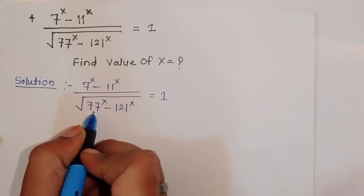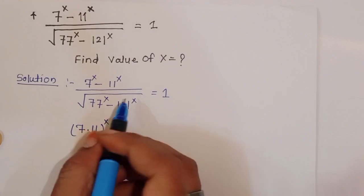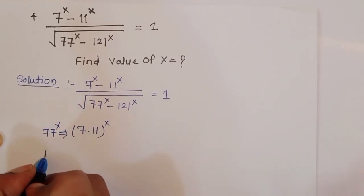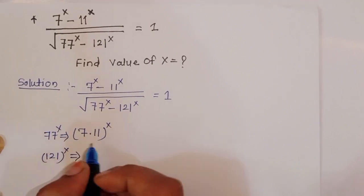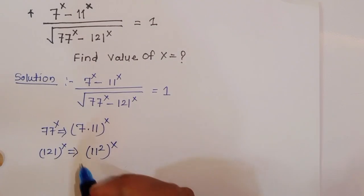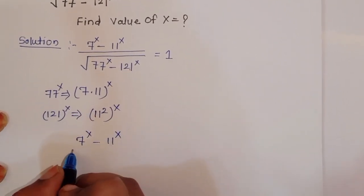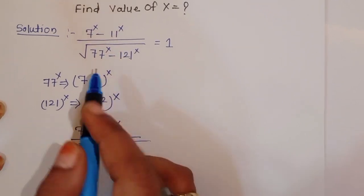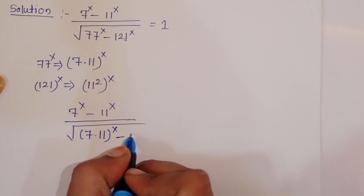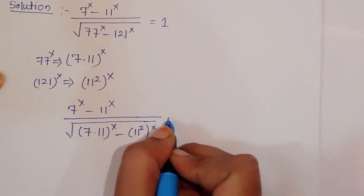Now, see here. We can write 77 as 7 times 11, so 77 power x becomes 7 times 11 power x. And 121 power x can be written as 11 squared power x, which is 11 power 2x. Putting these two values in the denominator, we get 7 power x minus 11 power x, divided by the square root of 7 times 11 power x minus 11 squared power x, equal to 1.